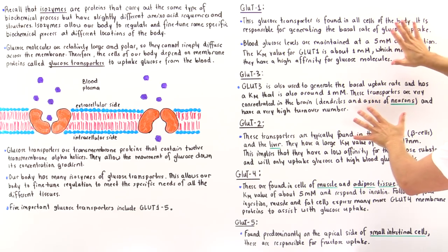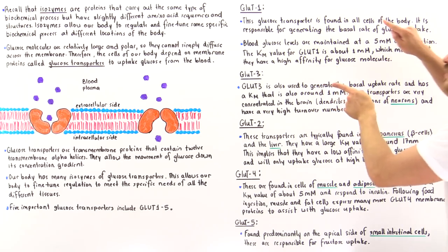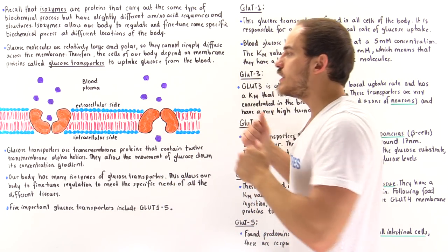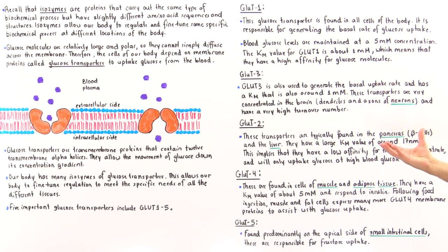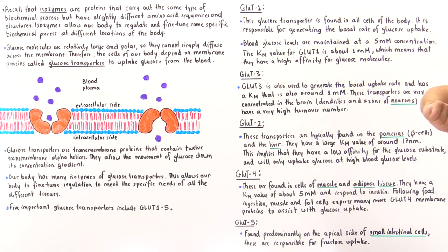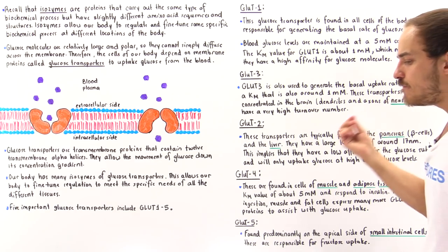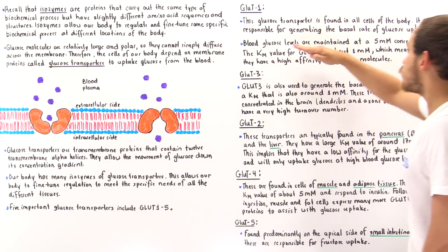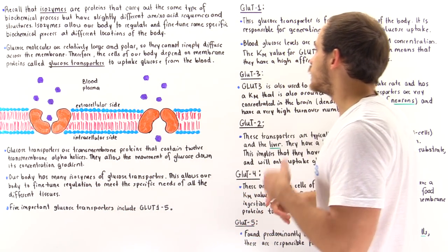Because of the low Km values of GLUT1 and GLUT3, at the normal 5 millimolar blood glucose concentration these molecules are continually shuttling and moving glucose molecules down their concentration gradient. GLUT1 is found all over the body in all different types of cells, predominantly in the membranes of red blood cells, and is responsible — along with GLUT3 — for generating the basal rate of glucose uptake. Their high affinity for glucose means that under normal blood glucose concentrations, these two transporters are continually on and continually moving glucose molecules.